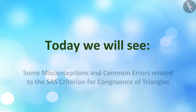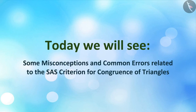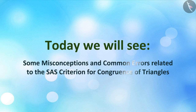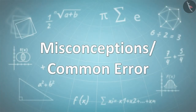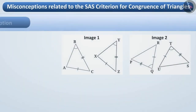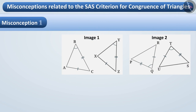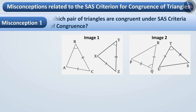Today, we will see some misconceptions and common errors related to the SAS criterion of congruence of triangles. Misconception 1: Which pair of triangles are congruent under the SAS criterion of congruence?